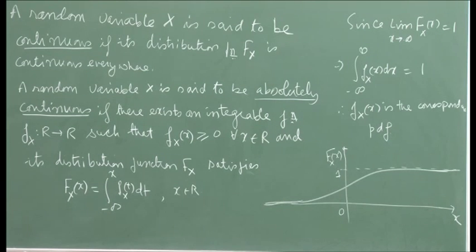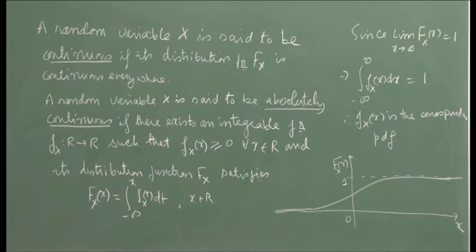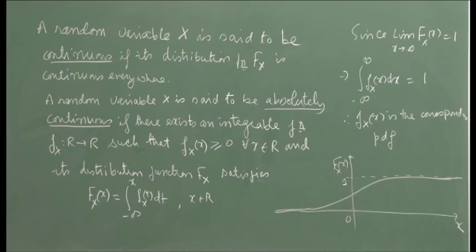Since the distribution function has the property that the limit of F(x) as x goes to plus infinity is 1, the integral from minus infinity to infinity of f(t) dt also equals 1, confirming that f is the PDF for X. Either you define it through capital F and derive the small f as the PDF, or you define the small f as the PDF and then define the distribution function. In this course, whatever is absolutely continuous I will call continuous, and I will distinguish between discrete, mixed, and continuous random variables.